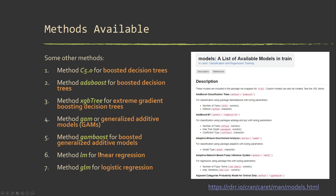Here are a few other model examples: C5.0 and AdaBoost for different implementations of boosted decision trees; XGBTree for extreme gradient boosting decision trees; GAM for generalized additive models; GAMBoost for boosted generalized additive models; LM for simple linear regression; and GLM for generalized linear models, which you can use for logistic regression. If you want to use a method not covered here, check the caret model list link to see how to apply that specific method. The main reason I chose the featured methods is that they are some of the most common used in remote sensing and geospatial science — random forests and SVMs have become the de facto methods. Since caret is so consistent, you can implement new algorithms without changing much code.